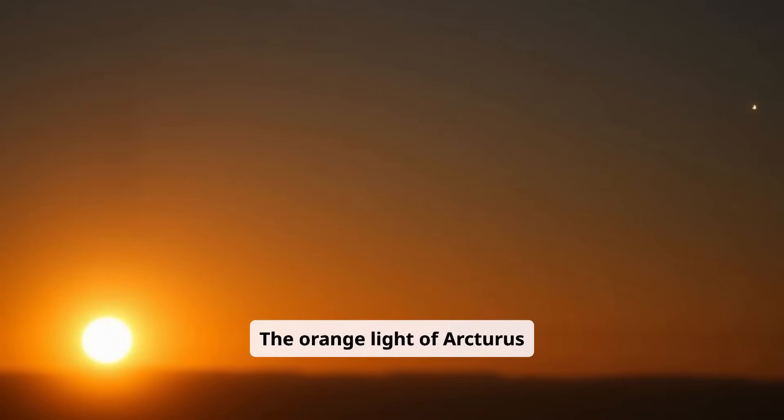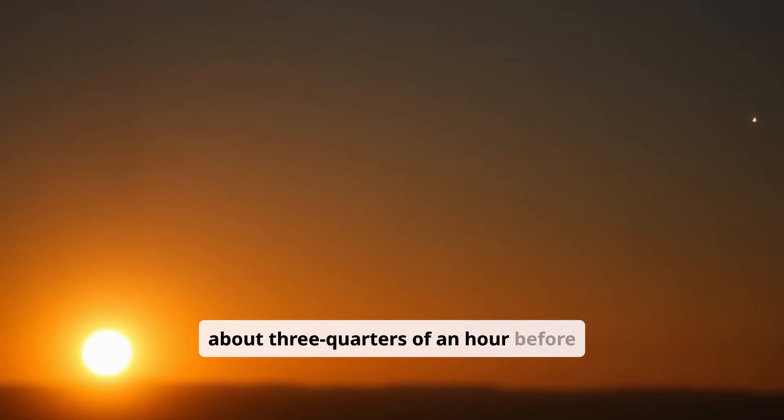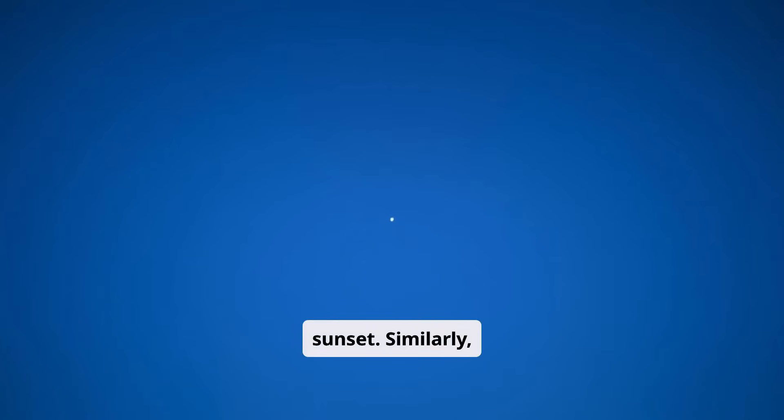The orange light of Arcturus can be spotted with the naked eye about three quarters of an hour before sunset. Similarly, under suitable conditions, the brightest star in the sky, Sirius, can also be seen during the day without a telescope.